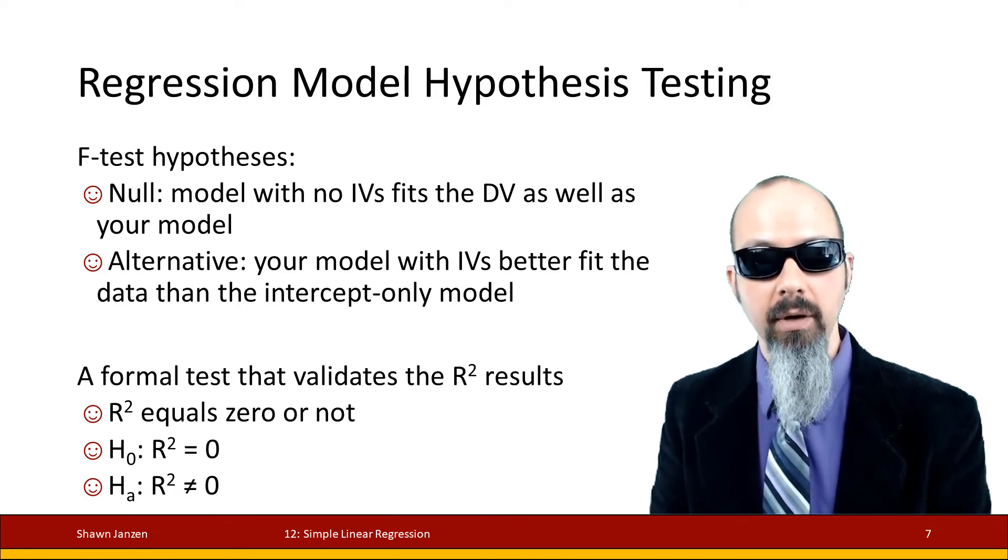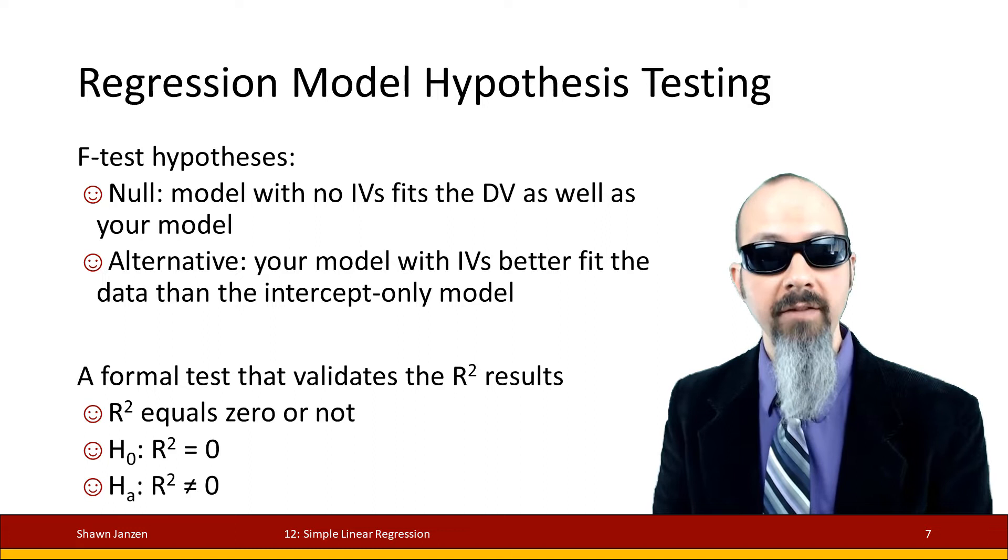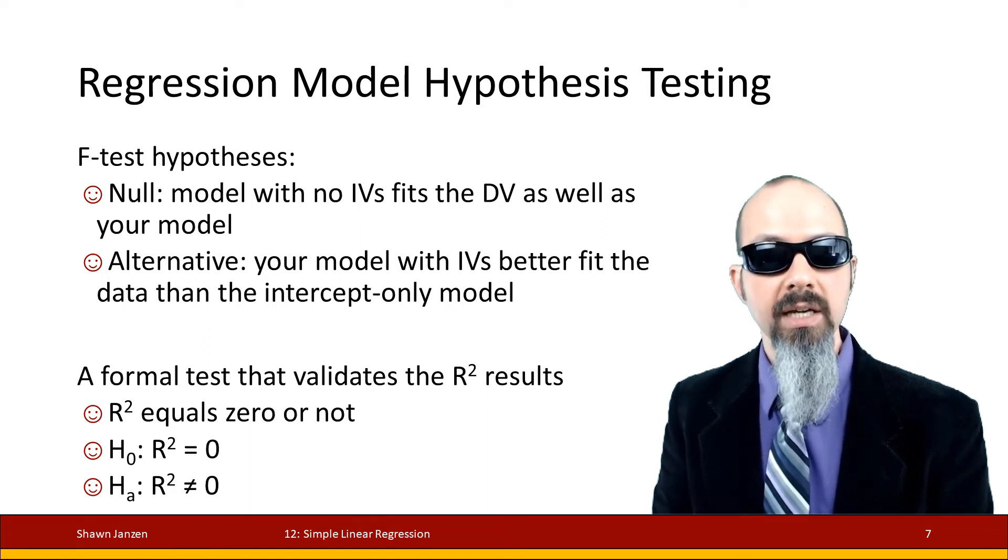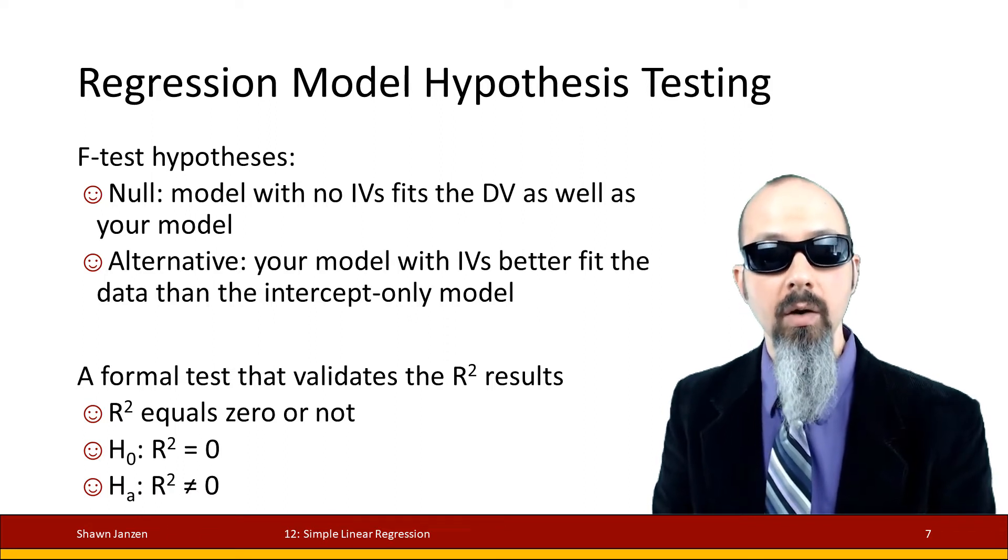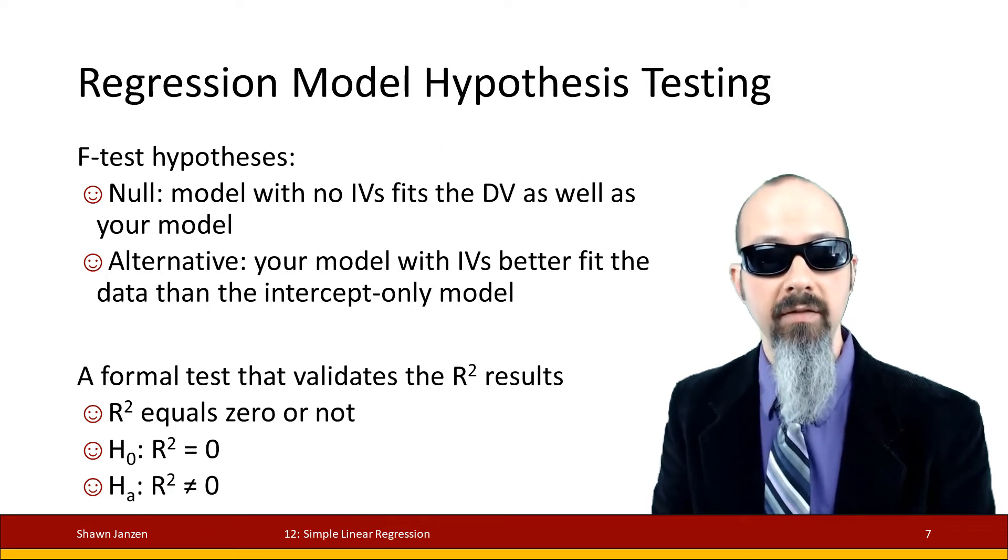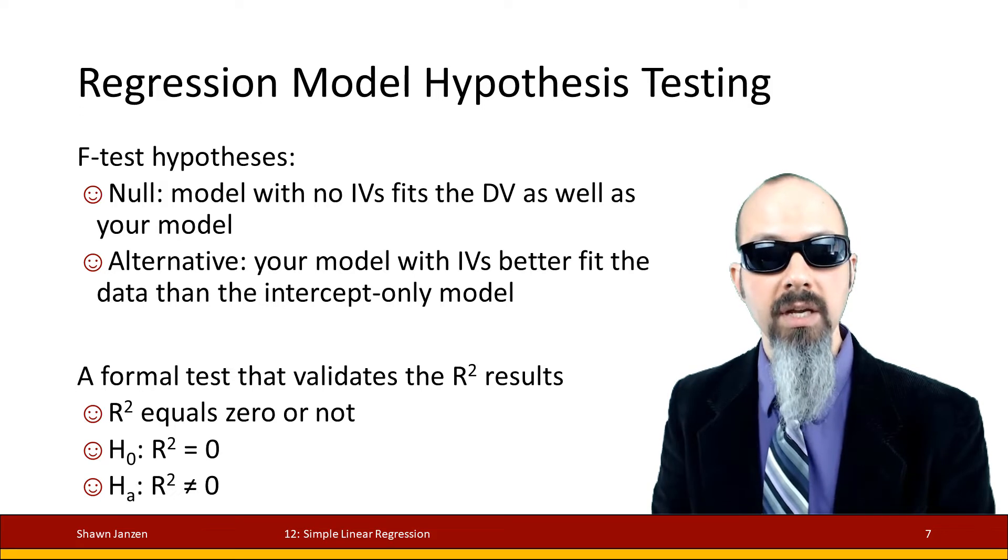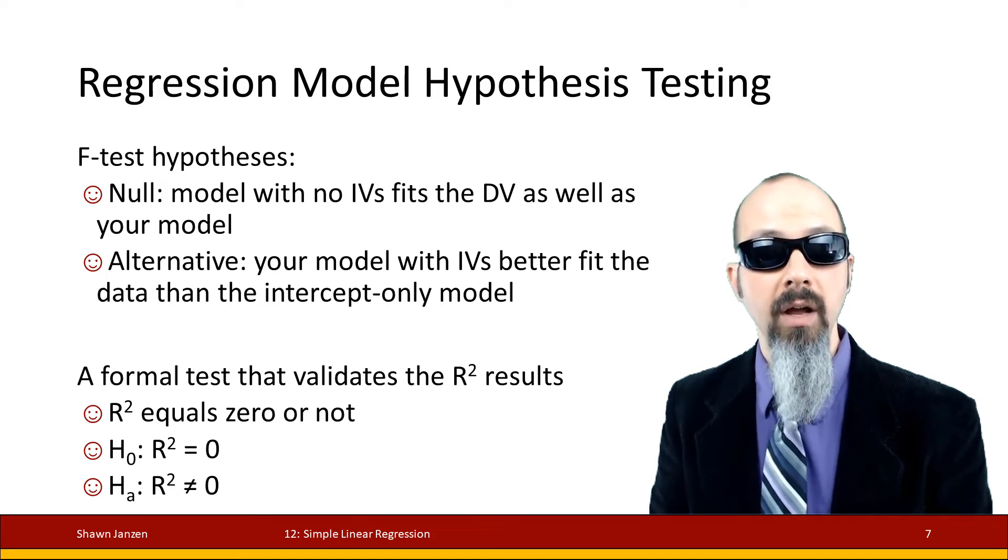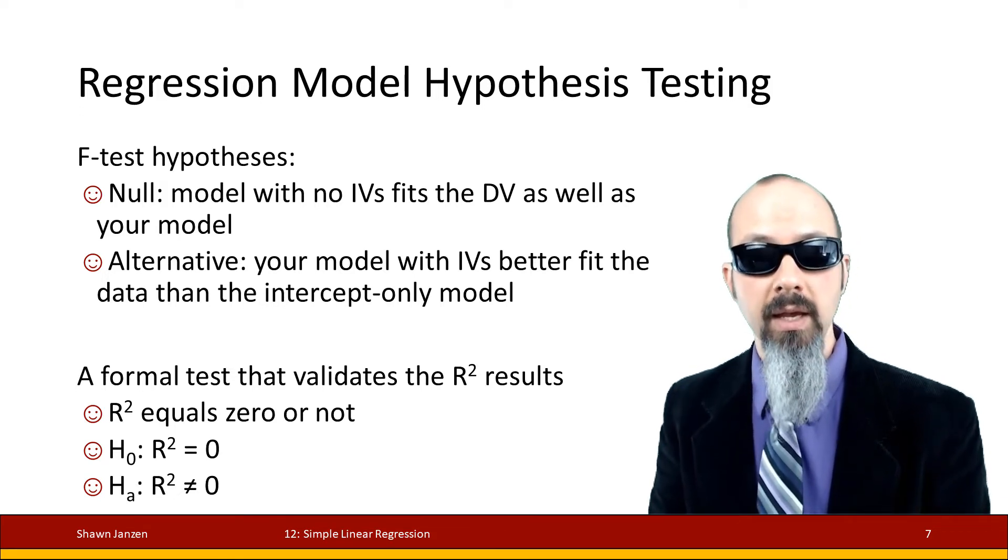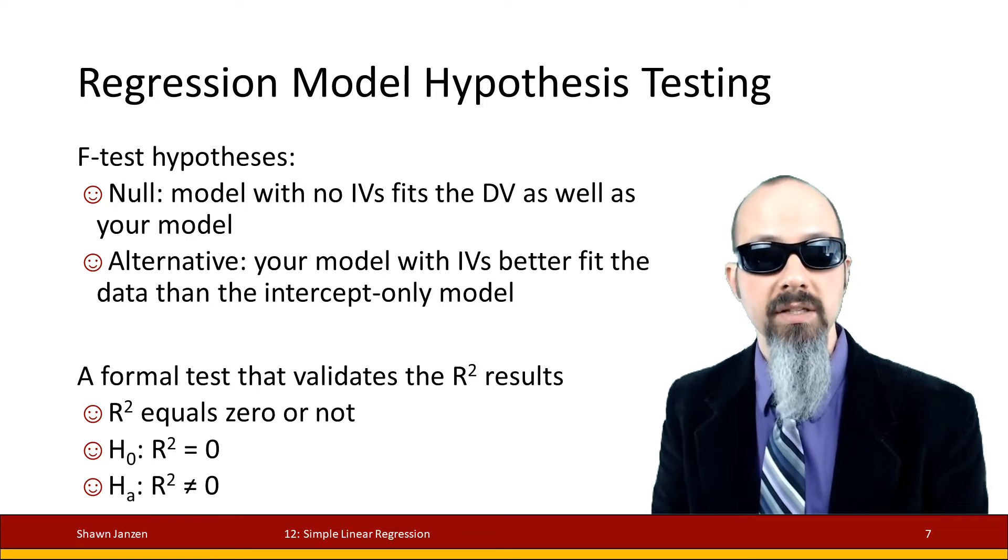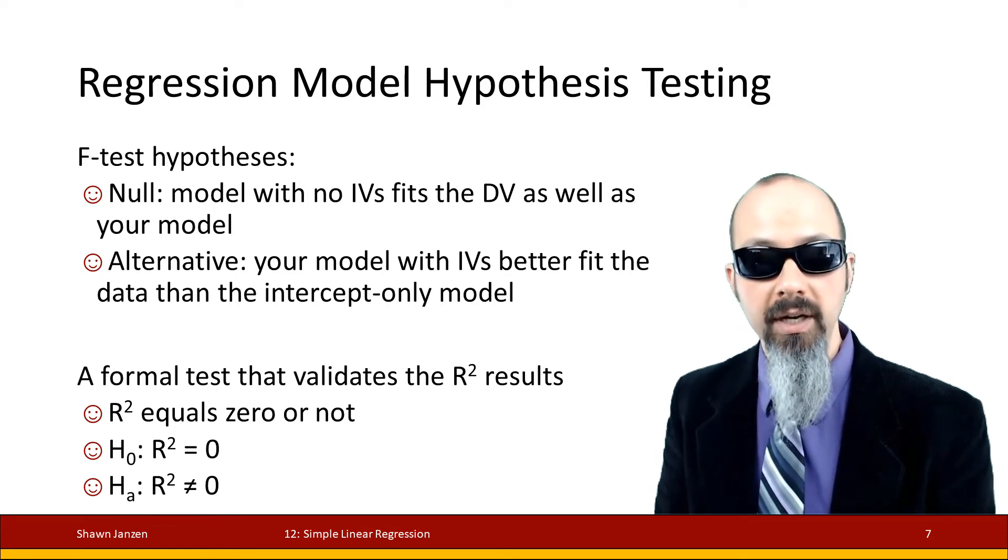We can apply a similar understanding to the entire regression model itself with an F-test, where the F-test has a null and an alternative. The null is going to say that you can predict your regression model better with just the mean of the dependent variable alone.